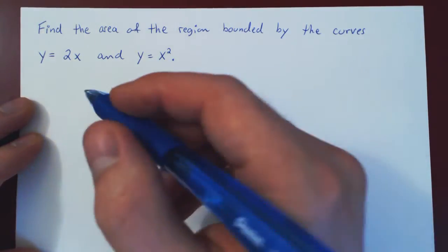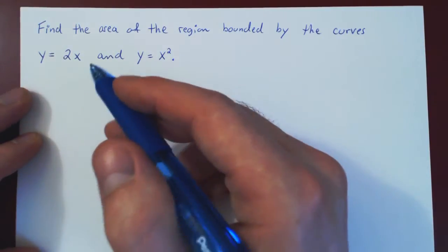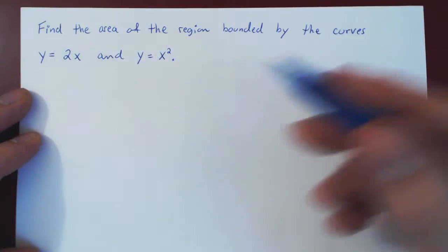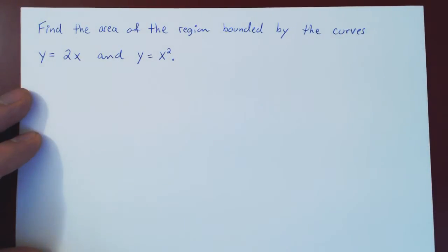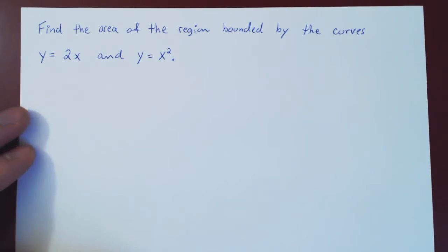In this video, we will consider a nice application of the definite integral by finding the area of a region bounded by given curves. If you have a single function f of x between a and b, and you integrate f between a and b, you get the area below the curve from a to b if f is positive, or the negative of the area if f is negative. We can use the same idea to find the area of even more complicated regions.